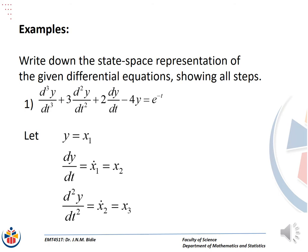Just to get the ball rolling, we are asked to write down the state space representations of the given differential equations showing all steps. We will start with number 1. Note that this is the third order derivative plus 3 times the second derivative plus 2 times dy/dt minus 4y equal to e to the power negative t as our input function. The first step is to let y be equal to x1.